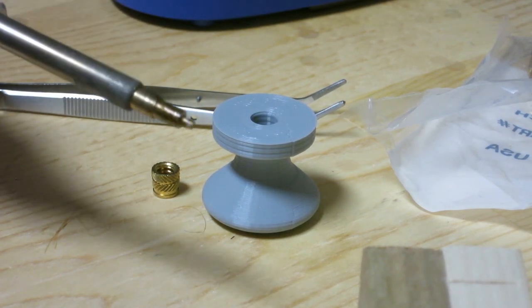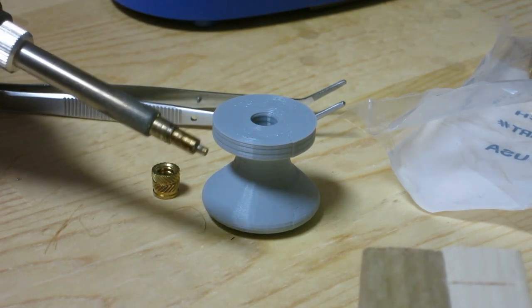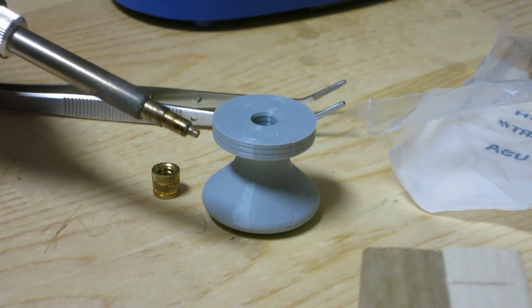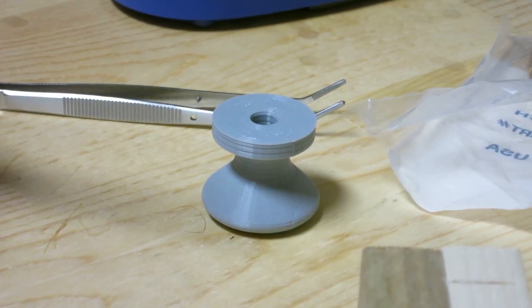Another thing I did is I bought a tip for my soldering iron specifically for doing heat set inserts. This is a little round tip that just plugs straight into that brass insert.